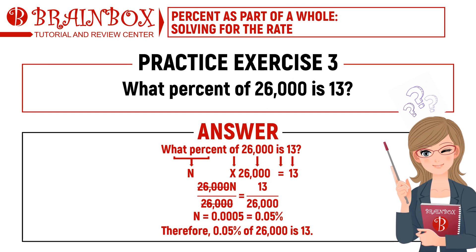Time is up. The correct answer is 0.05%. Translating to a mathematical equation, we get N times 26,000 equals 13. Isolating N by dividing both sides by 26,000, we get N equals 13 divided by 26,000, which equals 0.0005. Converting this decimal to percent form by moving the decimal point two places to the right and adding a percent symbol, N equals 0.05%. So 0.05% of 26,000 is 13.